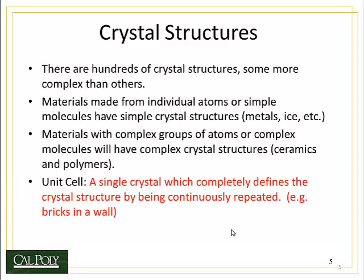One term we need to become familiar with is the unit cell. The unit cell is a single crystal which completely defines the crystal geometry by being continuously repeated. Think of a brick in a wall — if you know the shape and geometry of that brick, you can specify the location of every brick in the wall and define the geometry of the entire wall by defining just that one brick. That's what a unit cell is: it allows us to define the geometry of the entire material by defining the geometry of just one unit cell.